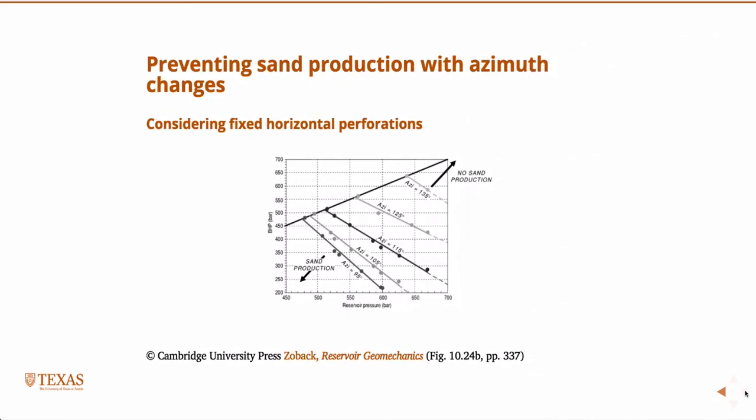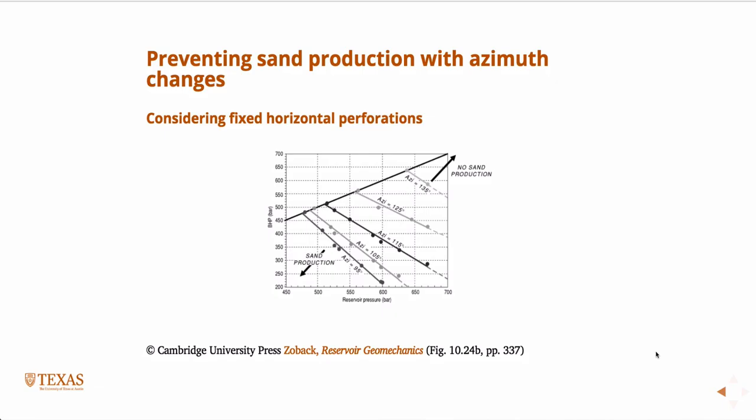This shows perforation angle from vertical — so instead of just considering fixed horizontal or vertical perforations, you're considering perforations that sweep through angles from vertical. With a 4% plastic strain criterion, these are different curves depending on drawdown and depletion. Basically, as long as you have near-vertical perforations you're not worrying about sand production under these stress conditions, whereas for near-horizontal perforations you would be.